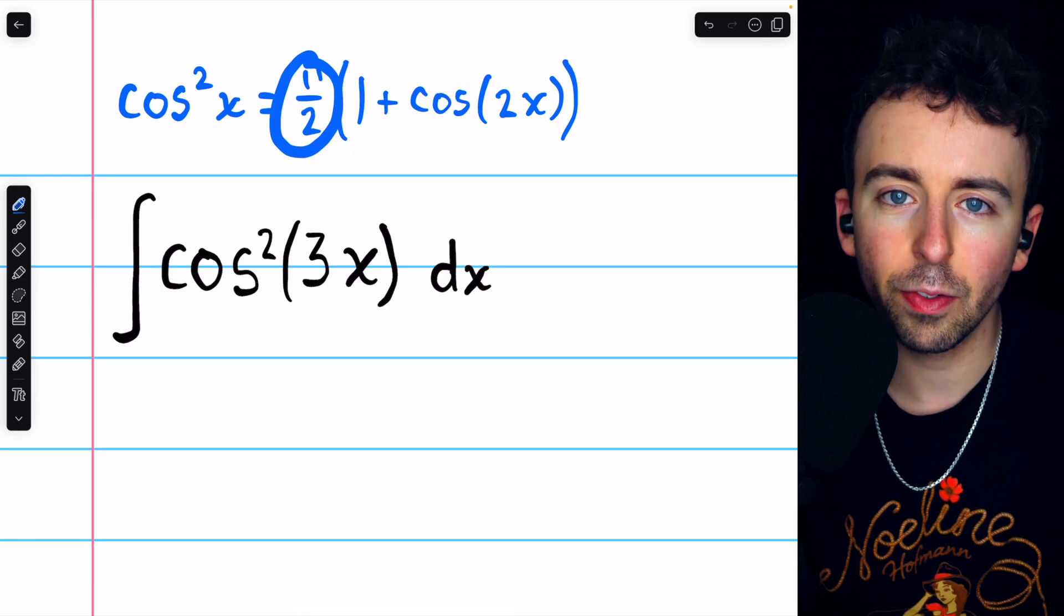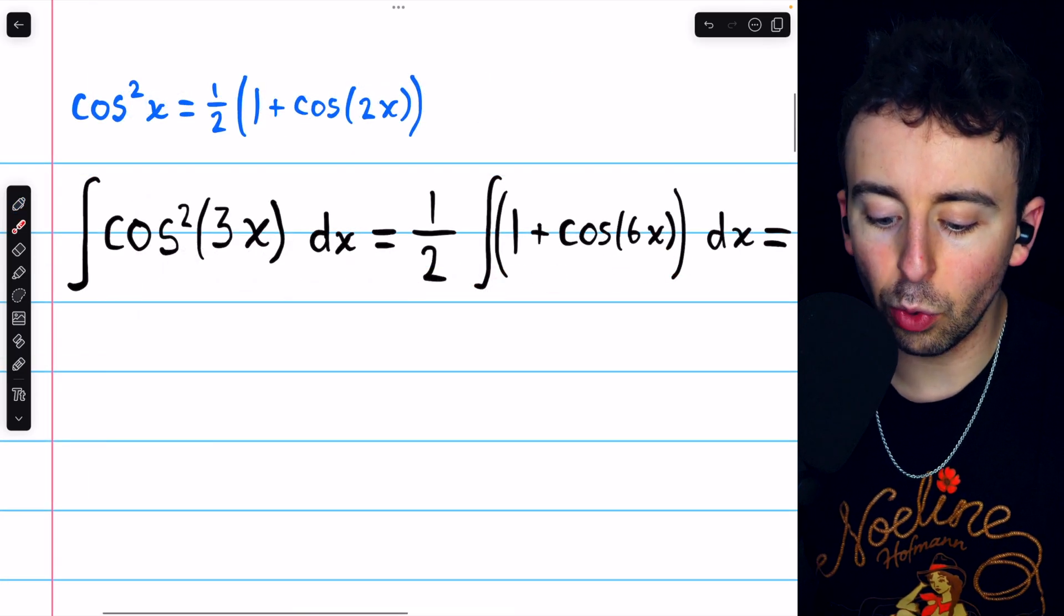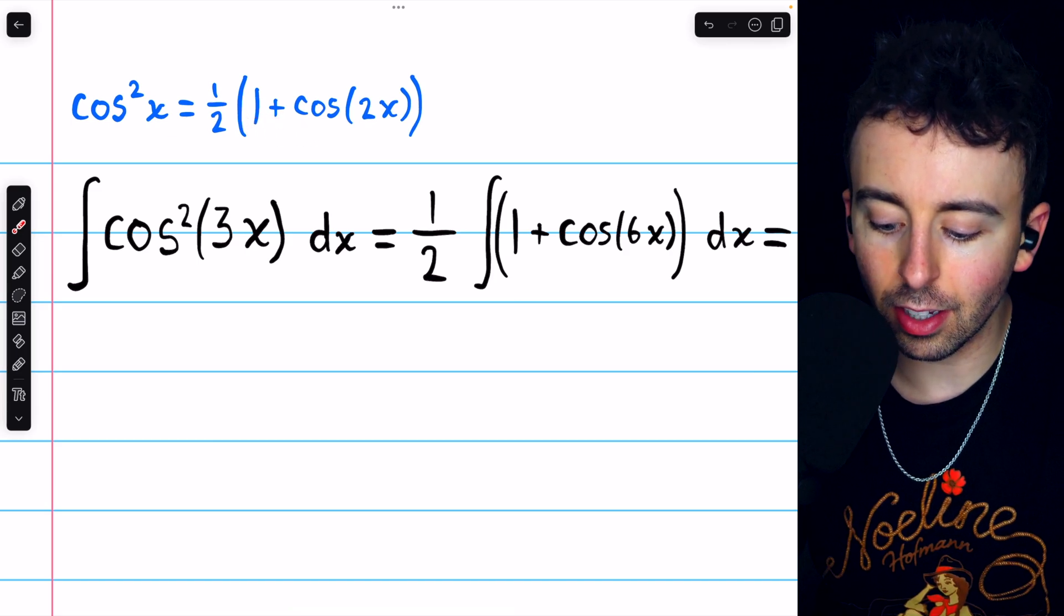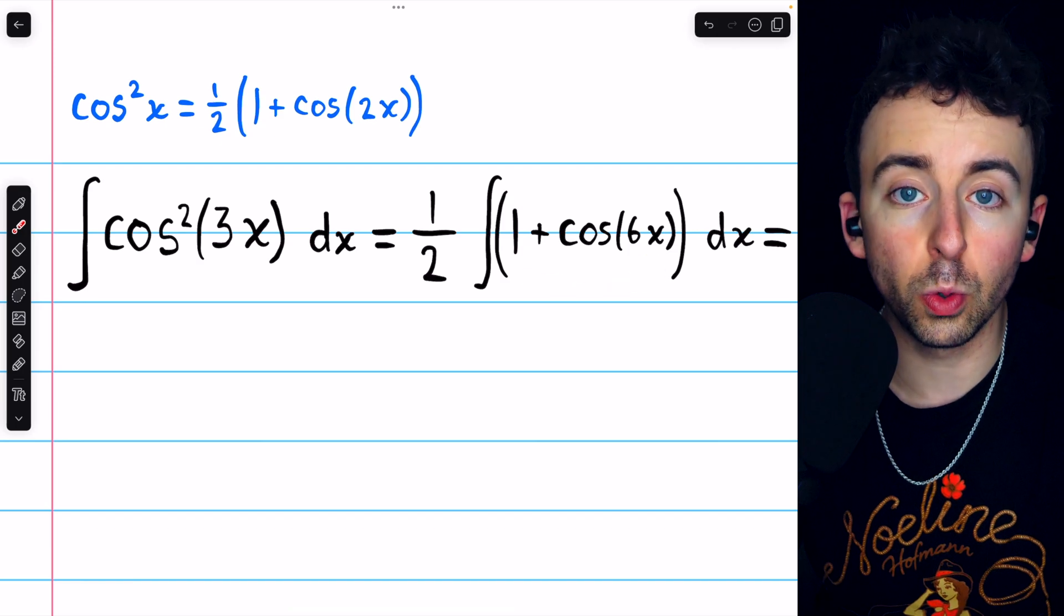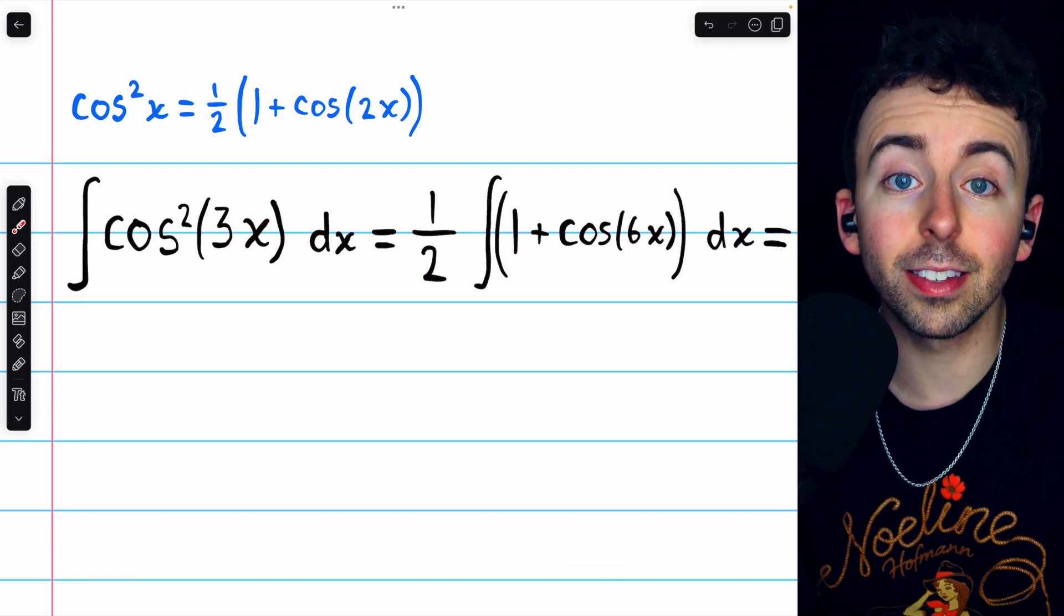Also, we're going to take this factor of 1 half and bring it outside of the integral. And that gets us here. We've brought the 1 half outside of the integral, and we have 1 plus cosine of 2 times our input. Our input was 3x, so now it's 6x.